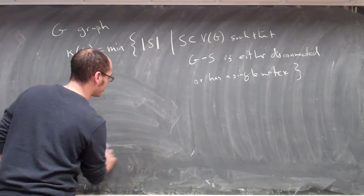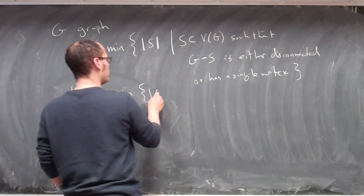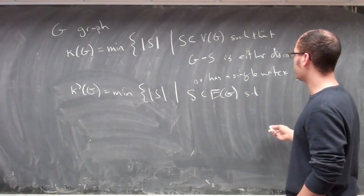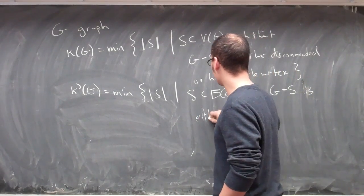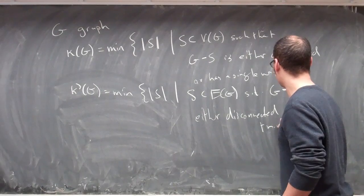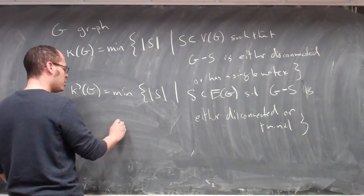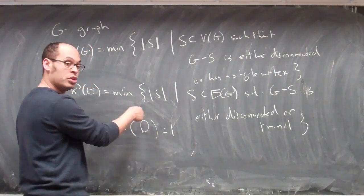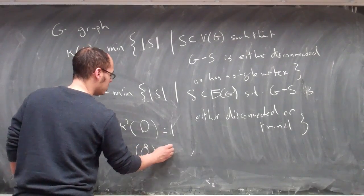There's also the edge connectivity of the graph, κ'. So there's vertex connectivity and edge connectivity. It's almost the same — the minimum order of some subset, this time a subset of edges, such that if you remove them, the result is either disconnected or trivial. The edge connectivity of this graph is actually one — you have to remove an edge to get it to be trivial, even though the vertex connectivity of that graph is already zero.